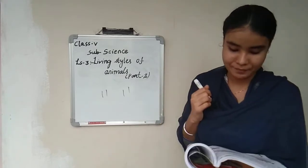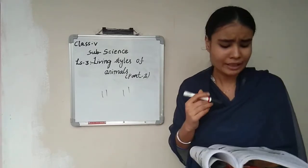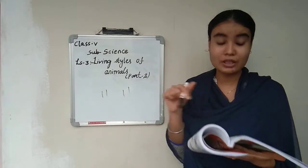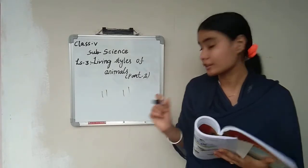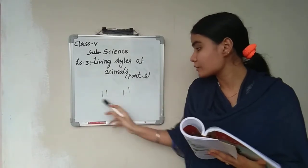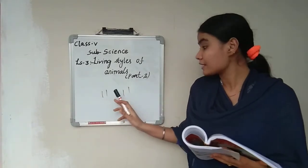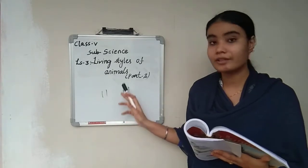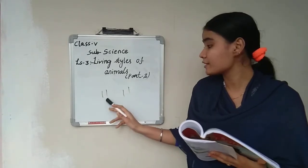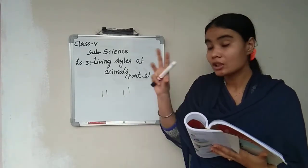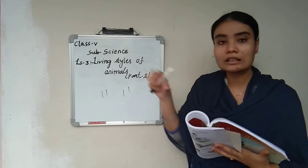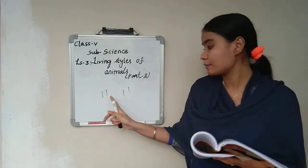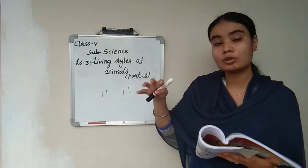Next are rats. Rats use their fore limbs to dig a hole in the ground.